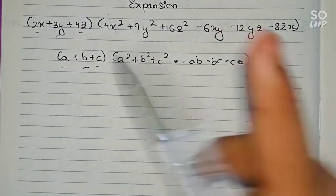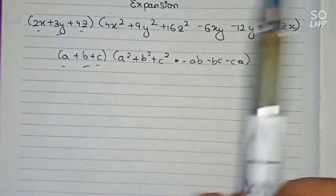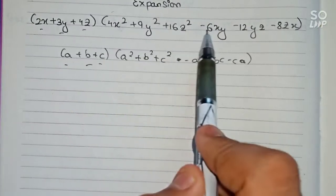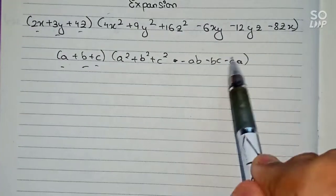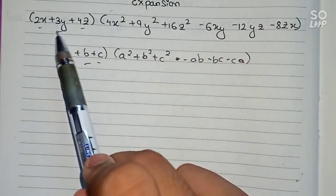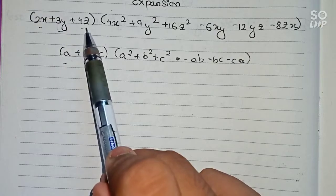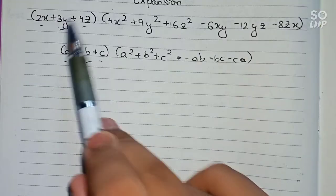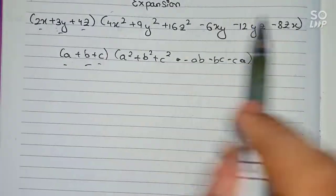Now minus ab, that means 2x into 3y. The sign will be minus, so 2×3 is 6, so minus 6xy verified. Now minus bc means 3y—sorry—3y multiplied by 4z.